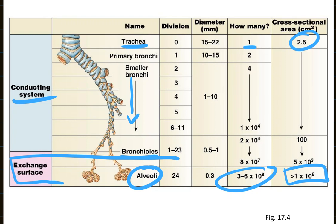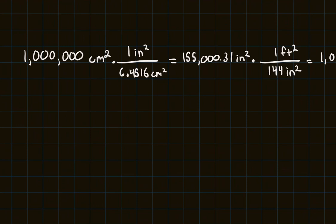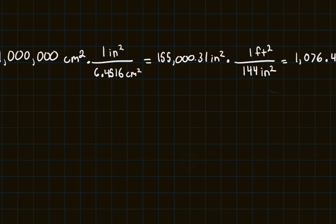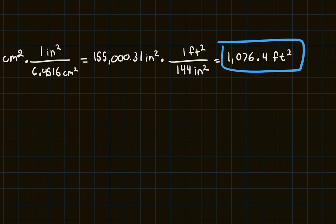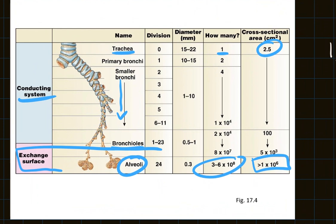Ian touched on this in class. I did a unit conversion to put it into perspective: 1,000,000 square centimeters converted into square feet is 1,076.4 square feet. That is the total surface area of the exchange zone of your lungs, your alveoli — a huge surface area. To put it into perspective, my apartment is around 600 to 700 square feet, which is not nearly as big as the surface area of the lungs. So your lungs are very overbuilt and have a huge surface area that allows for gas exchange.